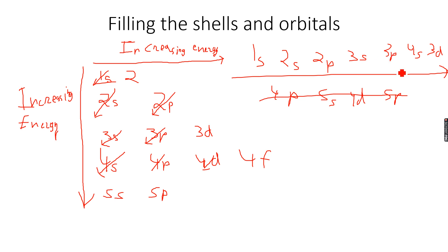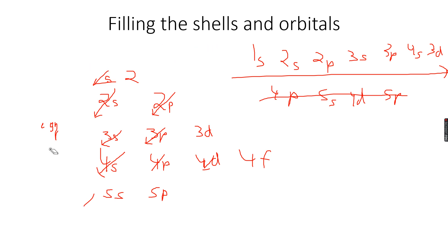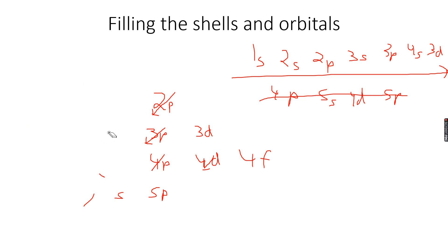The order is: 1s, then 2s, then 2p, then 3s, then 3p, then 4s, then 3d. Now let's see why we have only two electrons in the first shell and only eight electrons in the second shell, and how this theory helps us explain that concept.